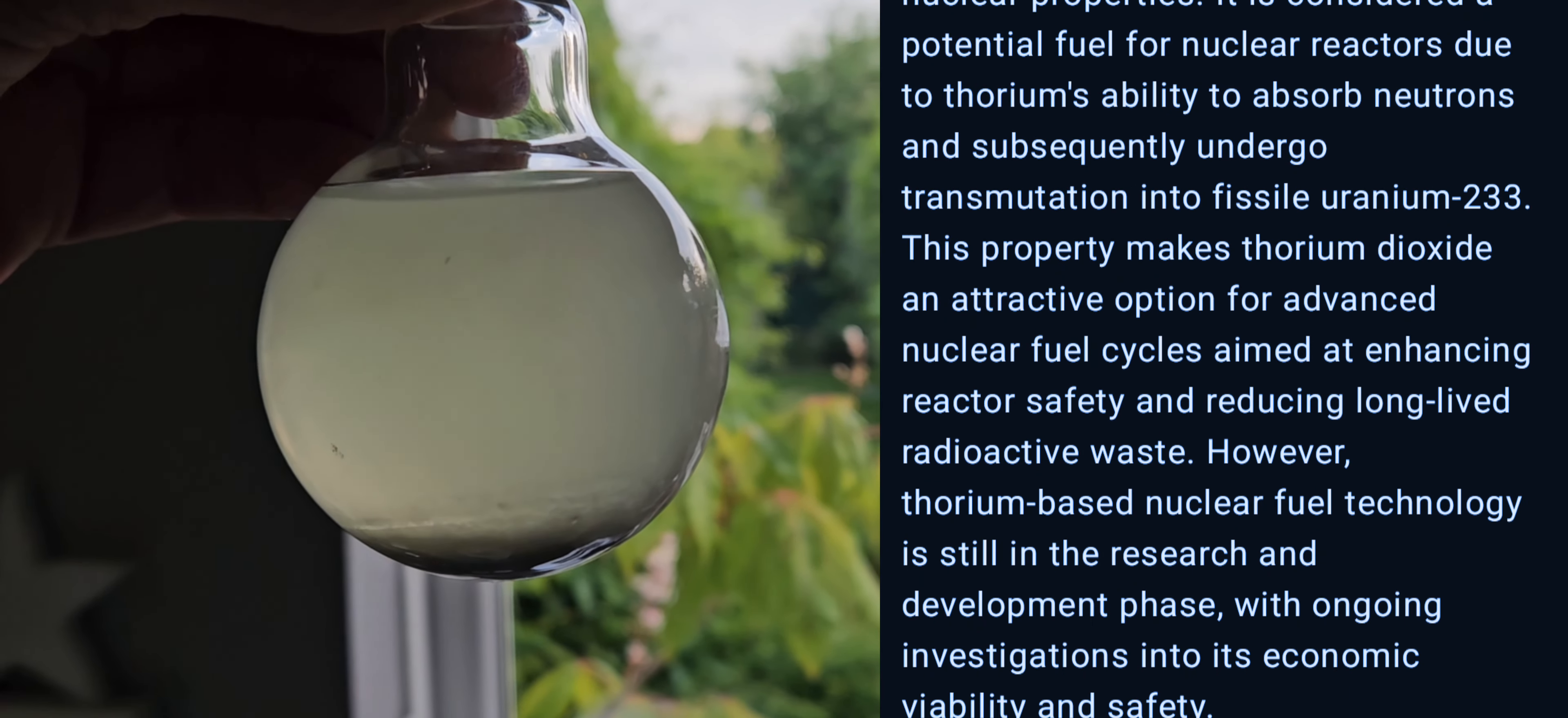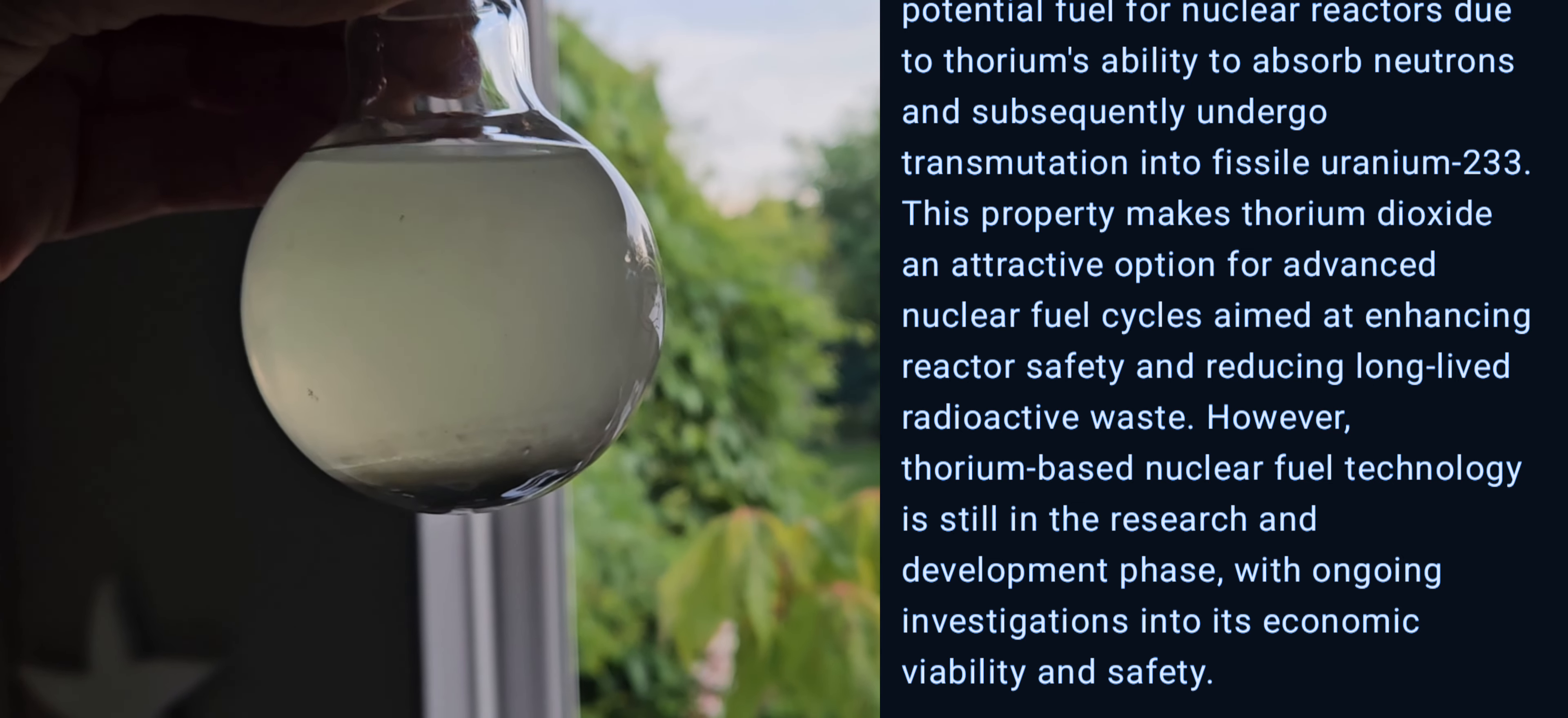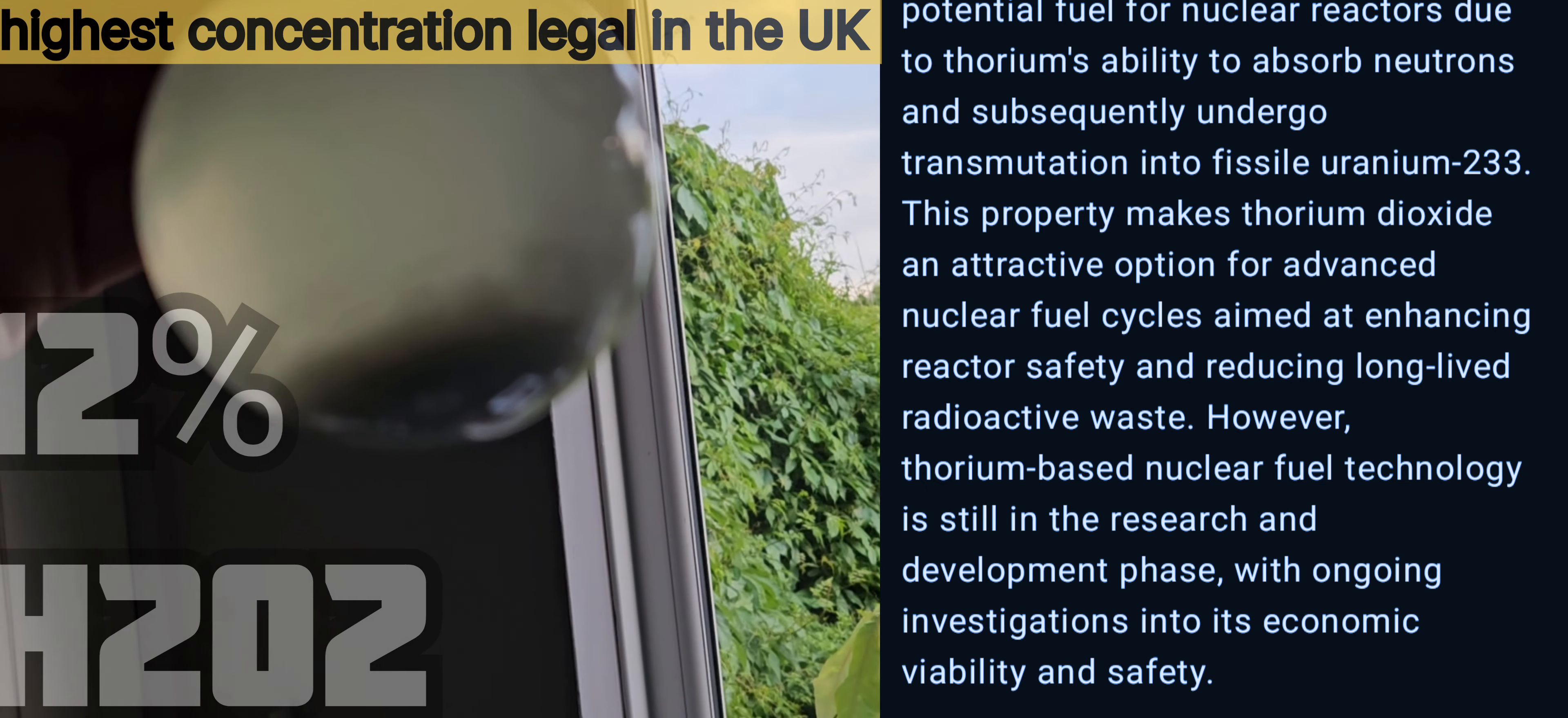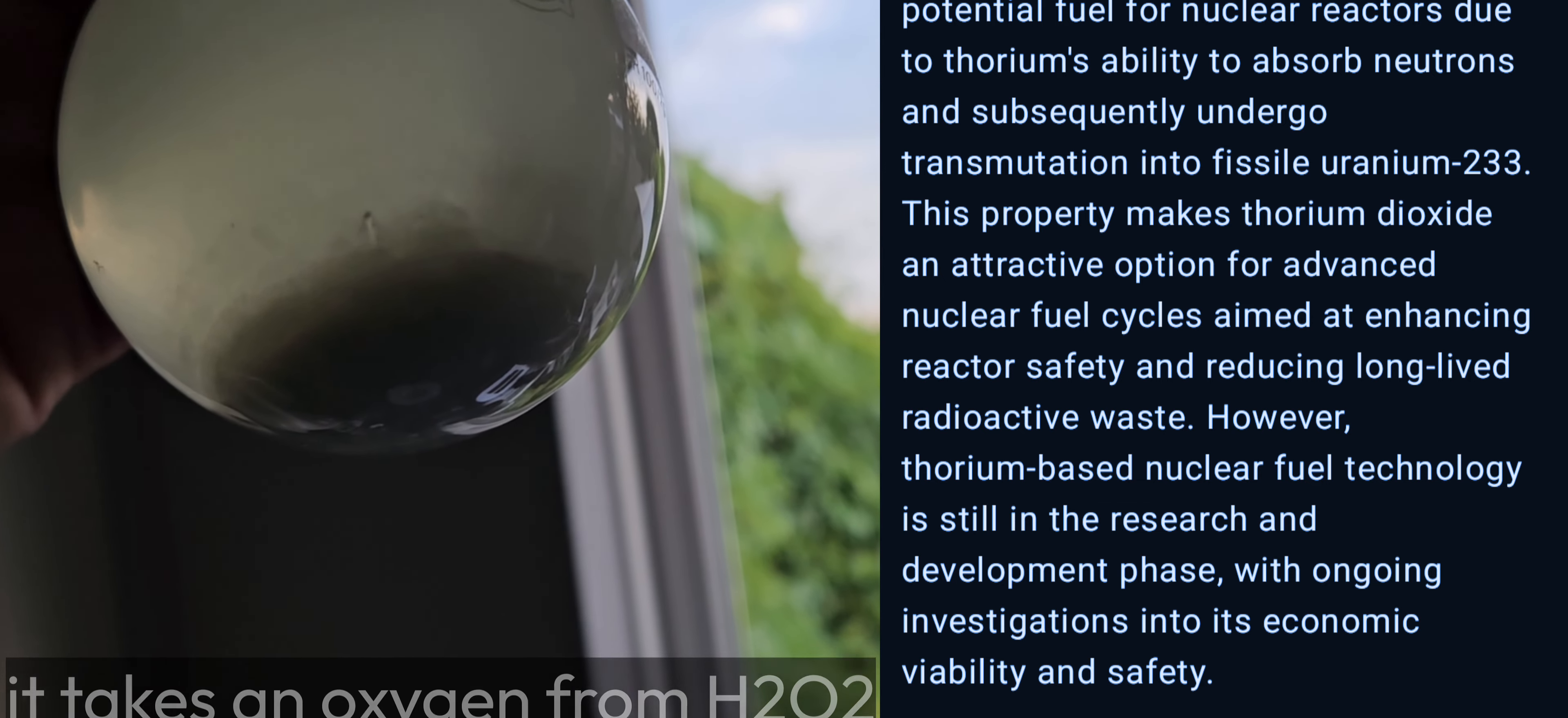This was obtained from two percent thoreated tungsten welding electrodes which have been sitting in hydrogen peroxide for several weeks. The tungsten dissolves and the thorium becomes thorium dioxide which is insoluble.